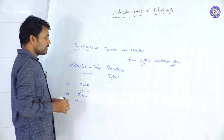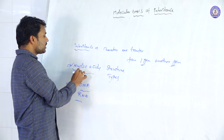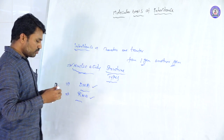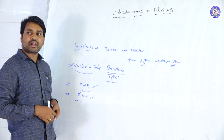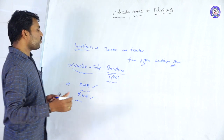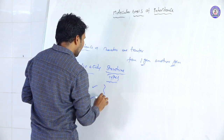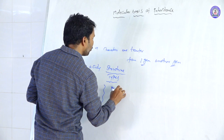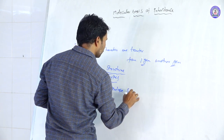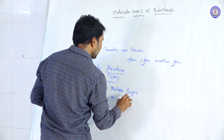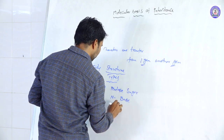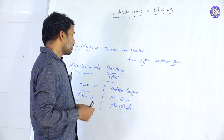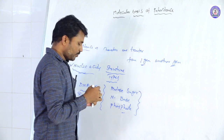First of all, nucleic acids. Nucleic acids are formed by key components: pentose sugar, nitrogen bases, and phosphate ions. These are the components of nucleic acids — either in DNA or RNA.